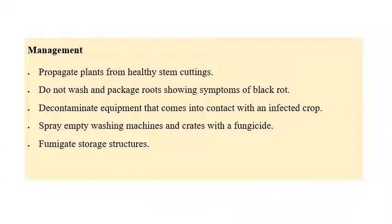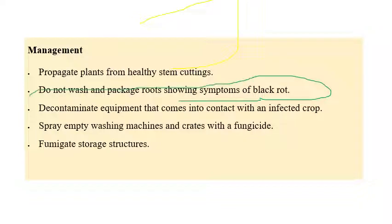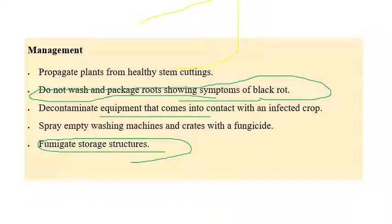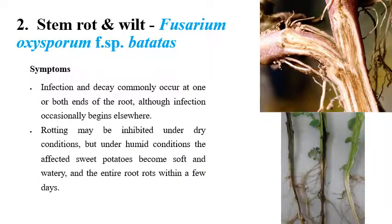For management of black rot, propagate plants from healthy stem cuttings — healthy propagating materials should be selected for planting. Do not wash and pack roots showing black rot symptoms; once observed, don't pack them for marketing. Decontaminate equipment with formalin and other cleaning agents, keeping intercultural operation equipment clean. Fumigate storage structures, and application of protective fungicides is also one of the management practices.